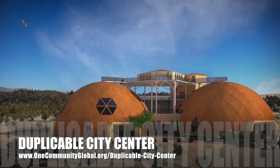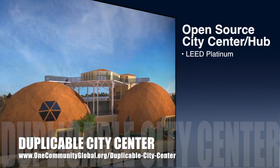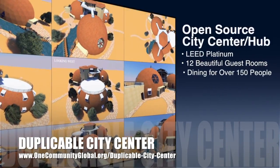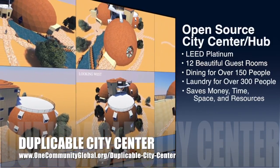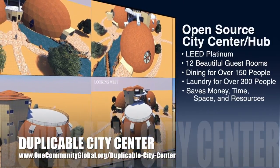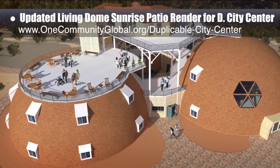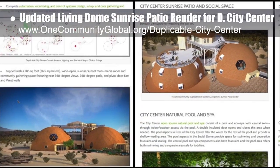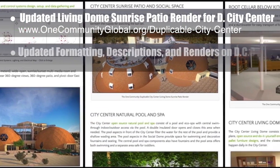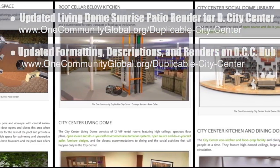One Community is also creating an open source duplicable city center designed to be LEED Platinum certified, provide 12 guest rooms, dining for over 150 people, and laundry and recreation space for over 300 people, all while saving money, time, space, and resources. This week the core team updated the Living Dome Sunrise Patio render for the duplicable city center, added it to the open source hub, and updated the formatting and descriptions for all other renders on the city center main open source hub.